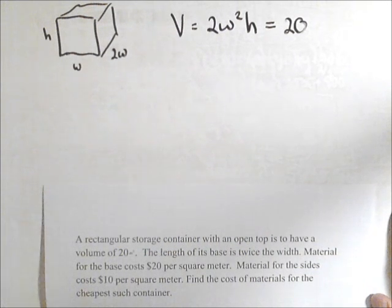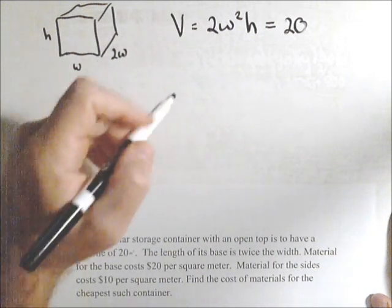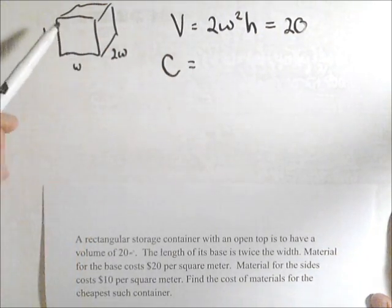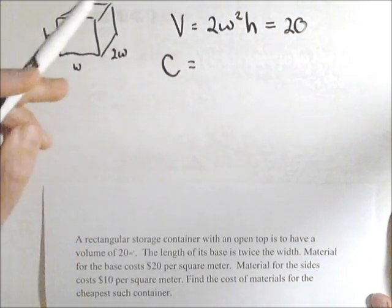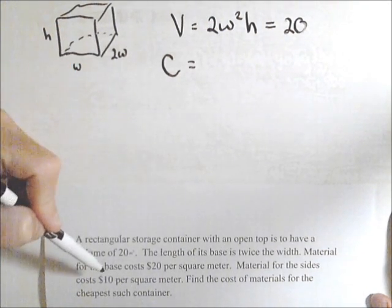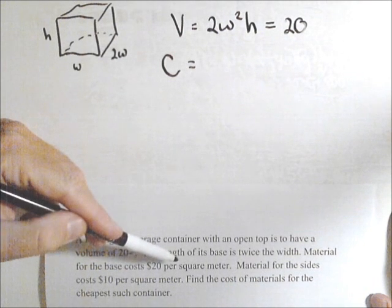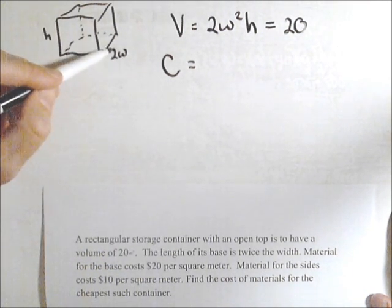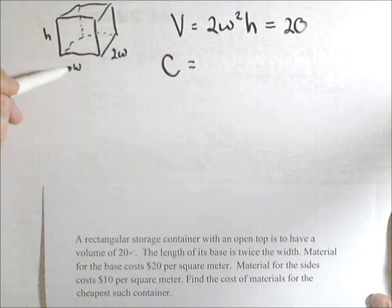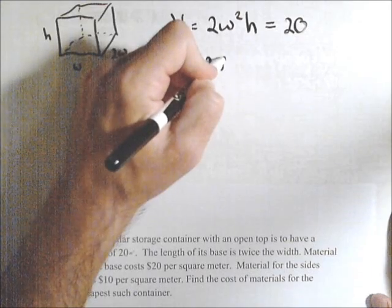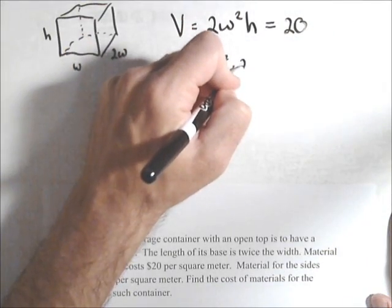Now what we need is a cost function that we're going to minimize. Let's call it C. That's going to come off the price of the sides and the base. So let's put in a base here. The base is the expensive one. It costs $20 per square meter. So that means we need the area of the base. Well, the area of the base is 2w by w. So 2w squared is the area of the base times its cost, which is 20.